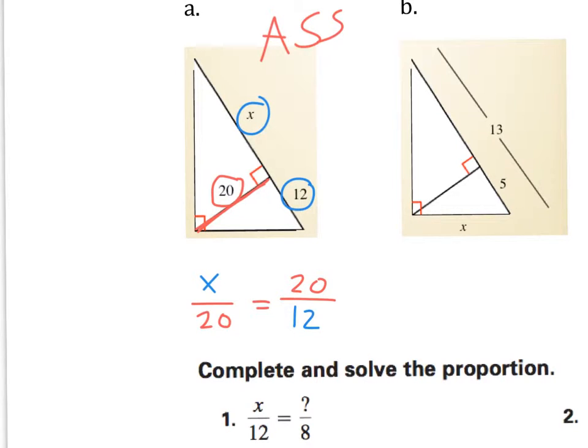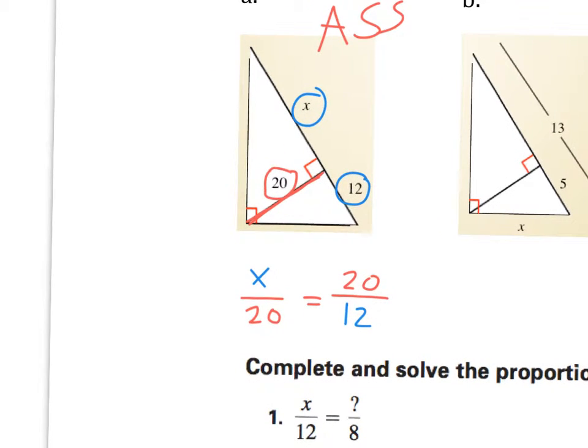All right. So when we cross multiply and solve, let me just go ahead and do that. Here I get 12x. And here I get 400. And x is going to give me 33 and one third is our final answer. Or it would have, could have been like this, 100 divided by 3. You could leave it like that as well.